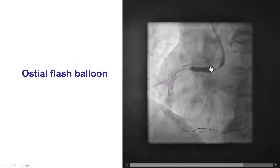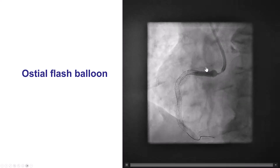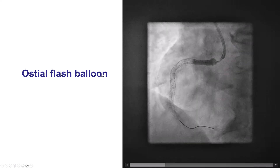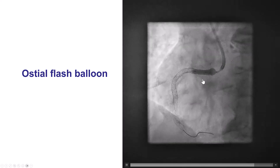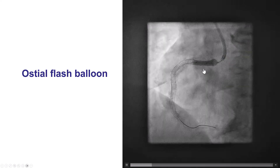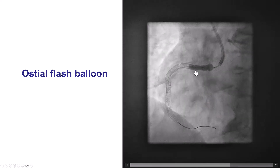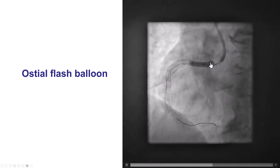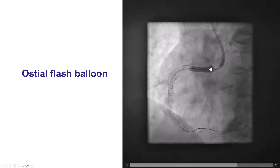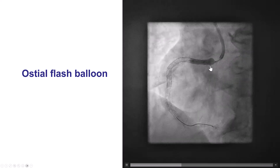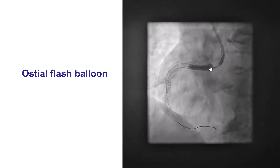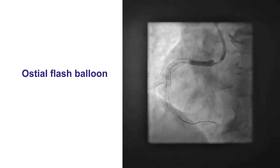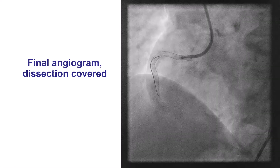One way to facilitate re-engagement after placing an aorto-ostial stent is to use the ostial flush balloon, which has two balloons: one is a standard non-compliant balloon, and the other is a larger balloon that can be used to flare the ostium. In this case, it was used not only to facilitate re-engagement, but also to potentially seal the aortocoronary dissection.